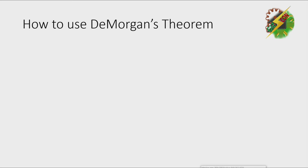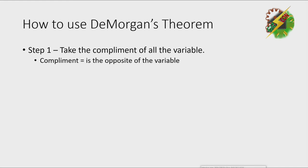How to use DeMorgan's Theorem? First step, take the complement of all the variable. Complement means is the opposite of the variable. An example is, the complement of A is A bar, or simply the complement is the negation of a variable.